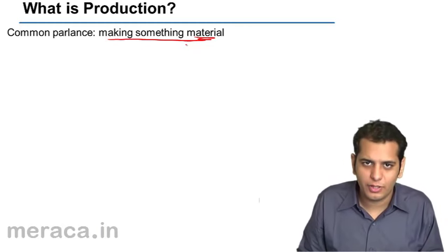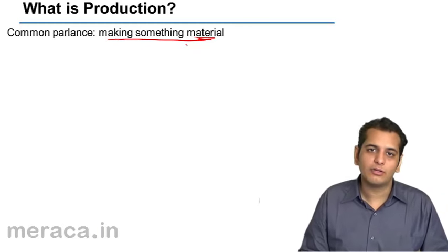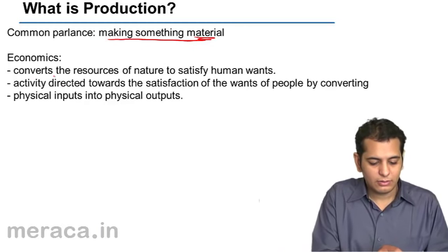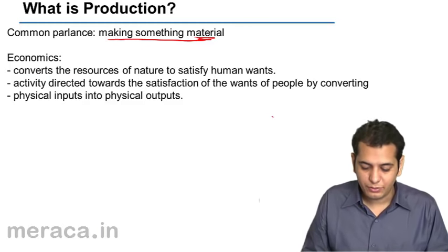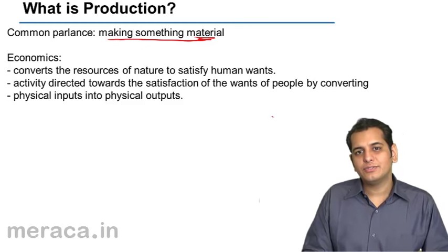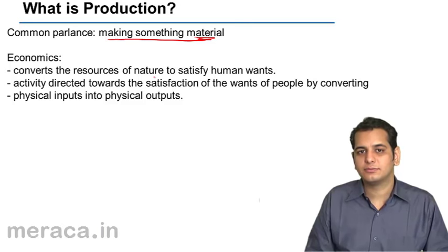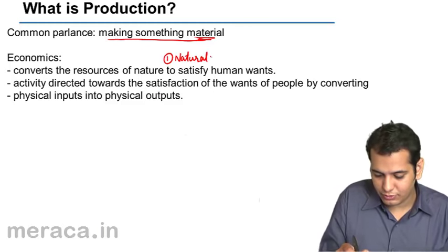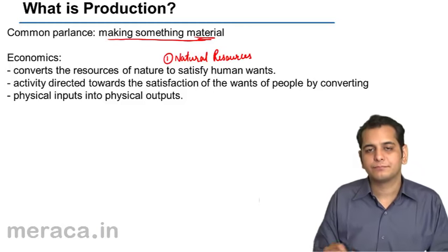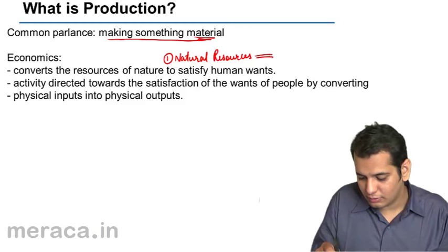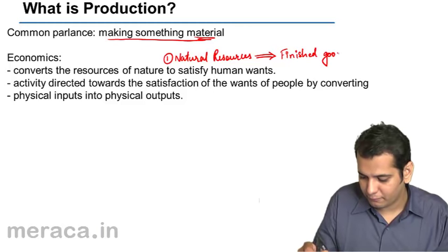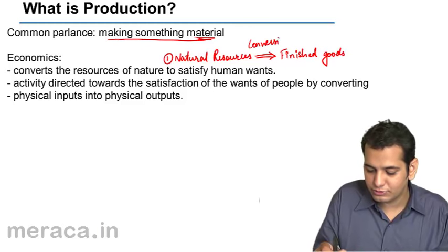This is what we generally understand about production. But let's see what production means in economics. Production in economics means conversion of resources of nature to satisfy human wants. It is the conversion of resources of nature. Natural resources are converted into some other form — we call them finished goods. This is the conversion process.